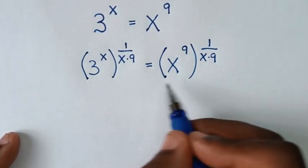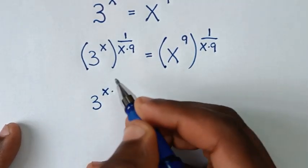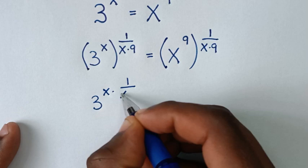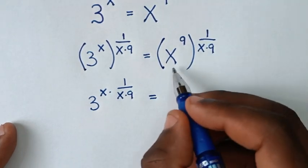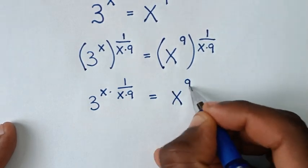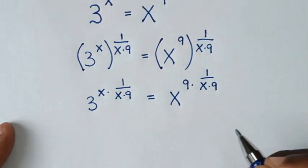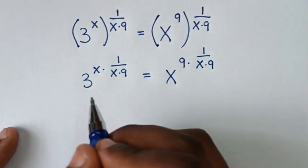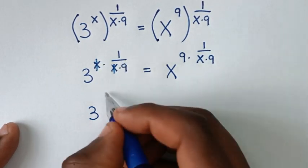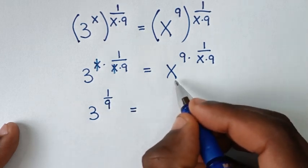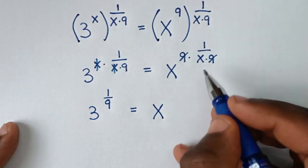In the next step we open the brackets. From this side, opening the bracket gives 3 to the power of x times 1 over (x times 9), which is equal to x to the power of 9 times 1 over (x times 9). Then simplifying: x cancels x, giving 3 to the power of 1/9. On the other side, 9 and 9 cancel, giving x to the power of 1/x.